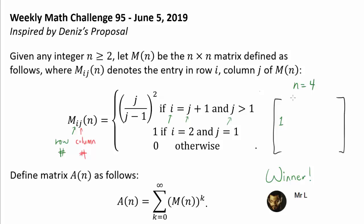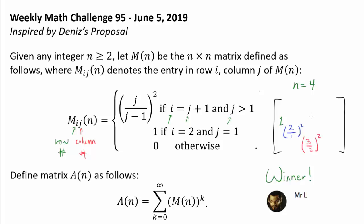When j equals 2, our row number must be 3, giving the entry 2 over 1 squared. When j equals 3, our desired row number is 4, since 3 plus 1 is 4, and the entry there is 3 over 2 squared. The rest of the entries are going to be zeros. So this is our M of 4.